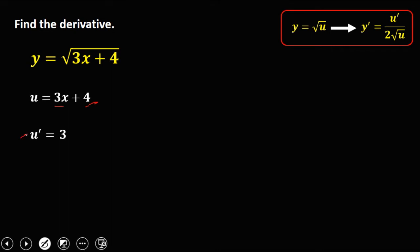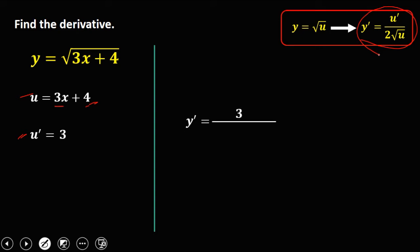Then substitute these values to this formula. So we have y prime is equal to u prime, that's 3, over 2 times the square root of u, or square root of 3x plus 4. So this is now the derivative.